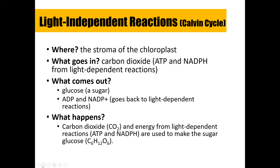Stage two is the light-independent reaction, also known as the Calvin Cycle, named after the scientists who helped discover the different processes of photosynthesis. This process occurs in the stroma — the fluid-filled area of the chloroplast that surrounds the thylakoids. What goes in: carbon dioxide, plus ATP and NADPH from the light-dependent reaction. What is produced: glucose, and also ADP (adenosine diphosphate), which means a phosphate has been lost from ATP.